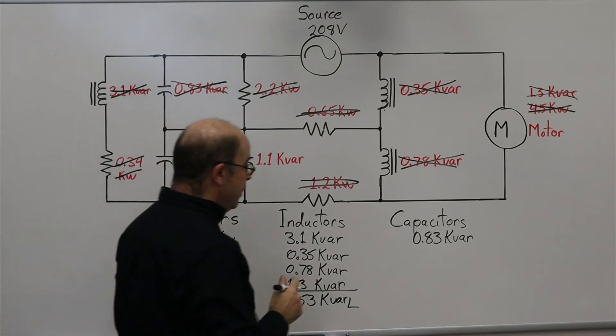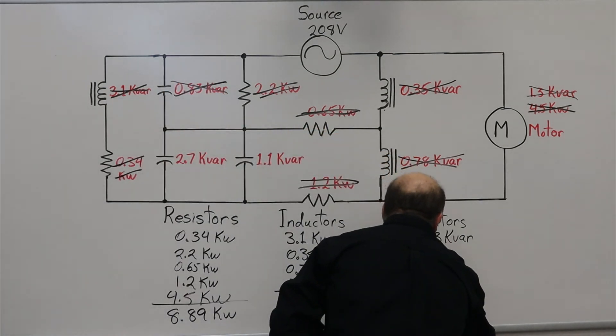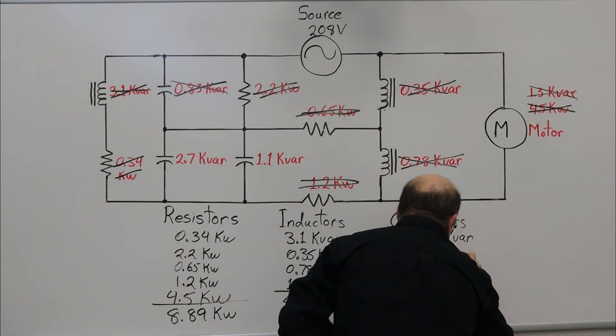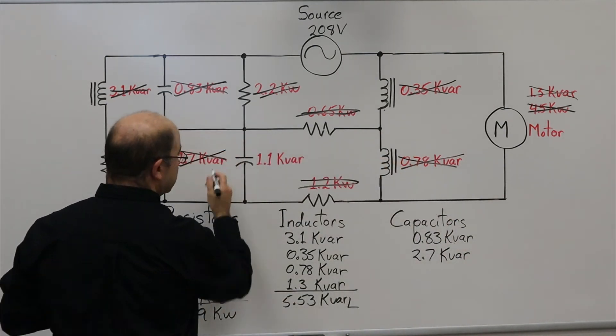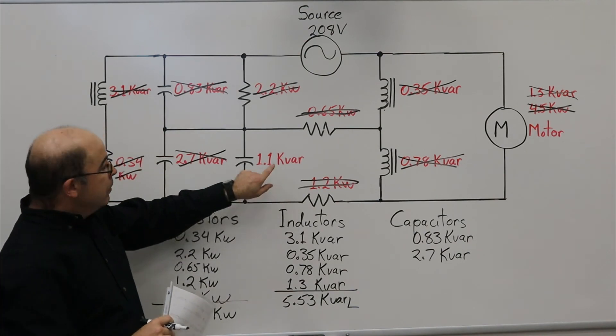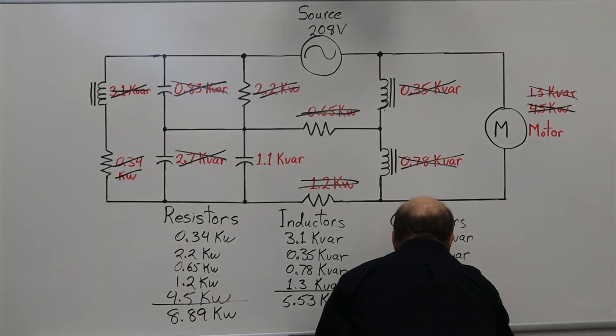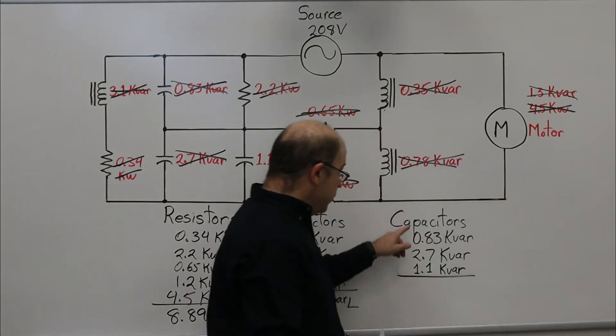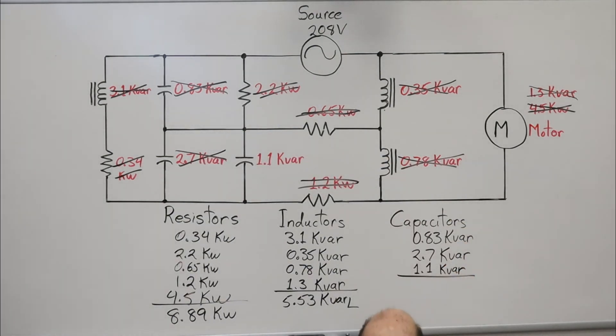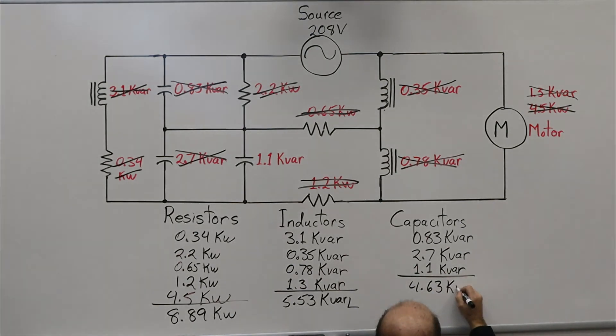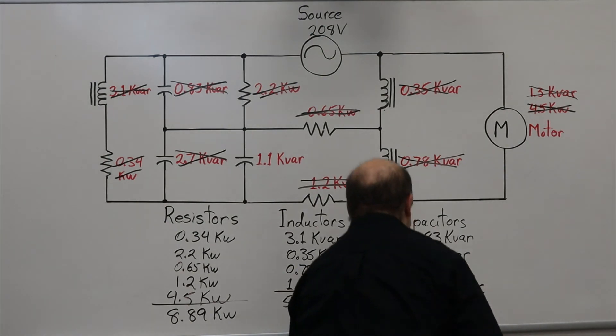2.7 kVAR, and last, 1.1 kVAR. Now, we'll find the sum: 4.63 kVAR capacitive.